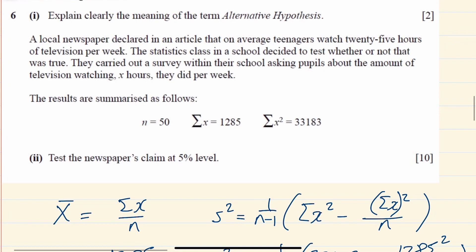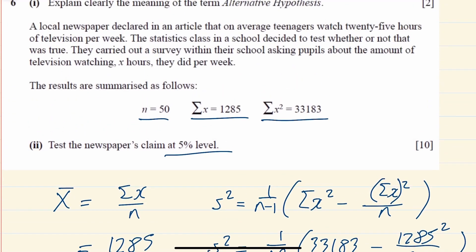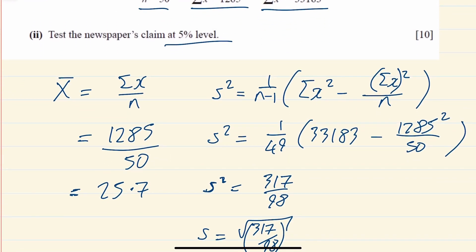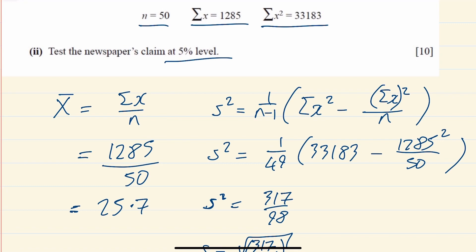Let's read the question again. A local newspaper declared that on average a teenager watches 25 hours of television a week. Statistics class decided to test whether or not that was true. The results were n = 50, sigma X = 1,285, sigma X squared = 33,183. Test this at a 5% level. The best estimate we have for the mean, they think the mean is 25 hours. So that's what they think mu is equal to. That's our original mu. That's what they think it is.